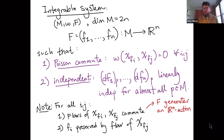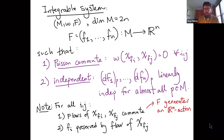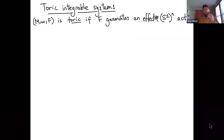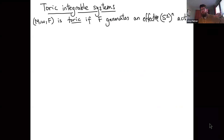For me, I'm not going to specify that one of them is the Hamiltonian — it's really more about group actions. We have a function F on a symplectic 2n manifold that generates an R^n action. Our favorite kind of R^n actions are when all the R actions are periodic, so a toric integrable system is when F generates an effective T^n = (S^1)^n action.